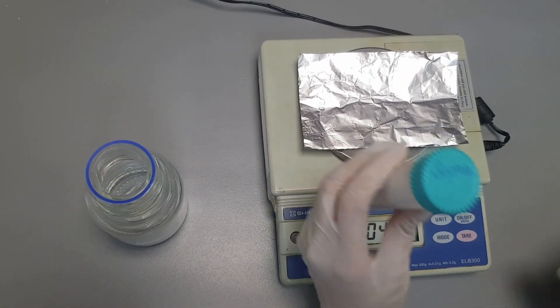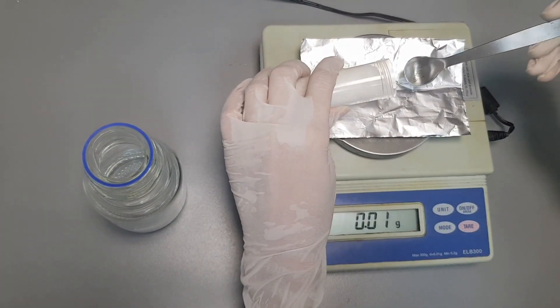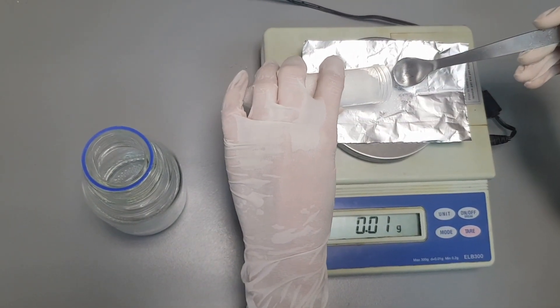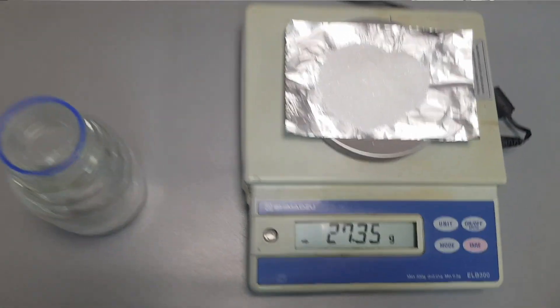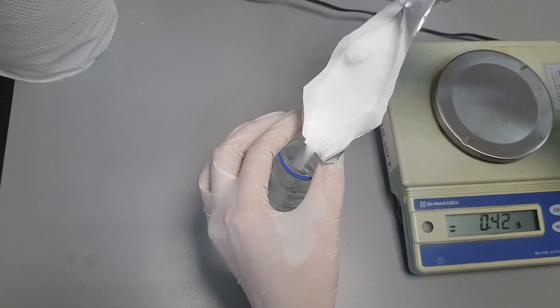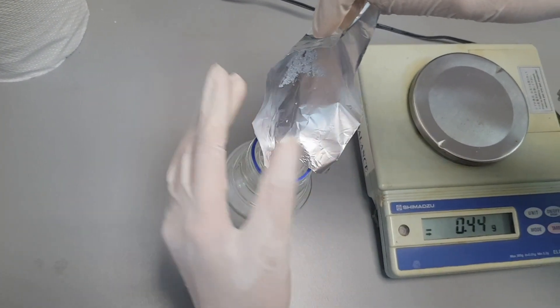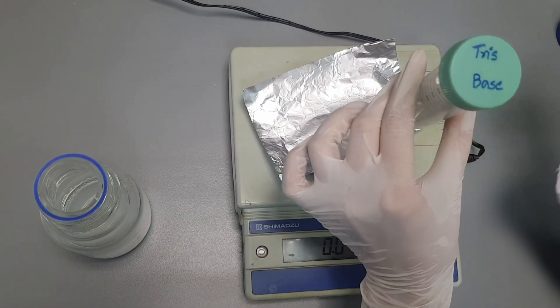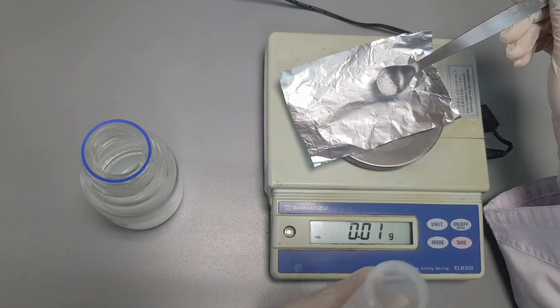Now weigh 27.3 grams of sucrose and add it to the reagent bottle. Now measure 0.32 grams of tris base and add it to the solution bottle as well.